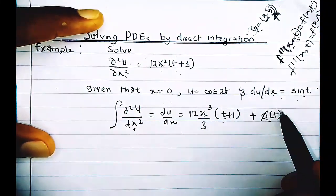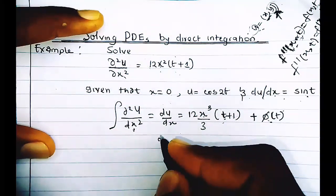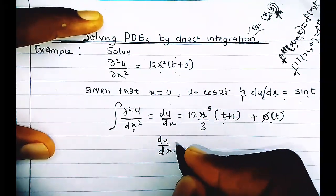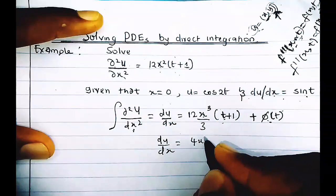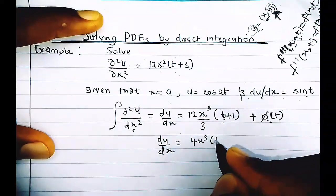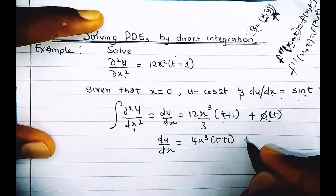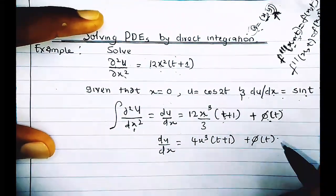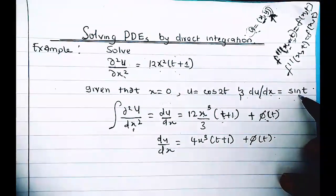So integrating 12x²(t+1) with respect to x gives us 4x³(t+1), and the constant of integration is φ(t). Therefore, du/dx = 4x³(t+1) + φ(t). We are told that du/dx equals sin(t) when x = 0.